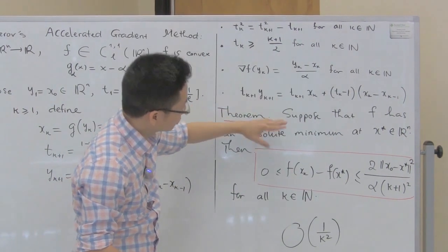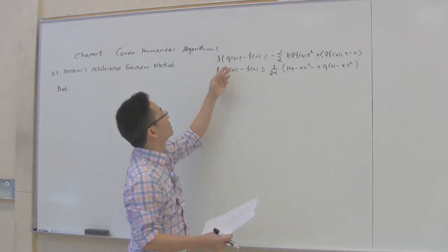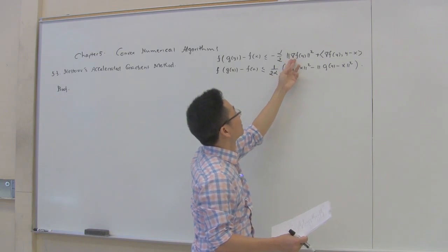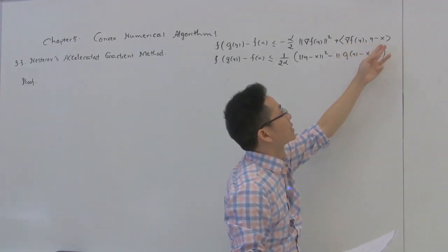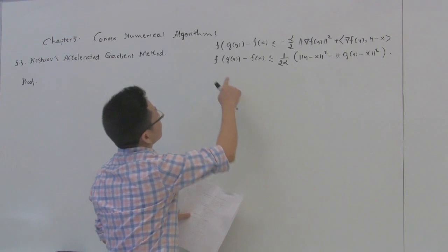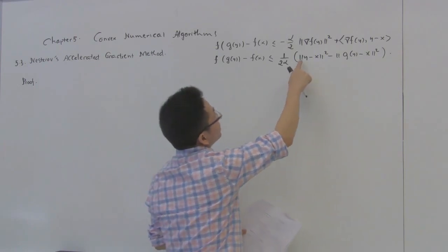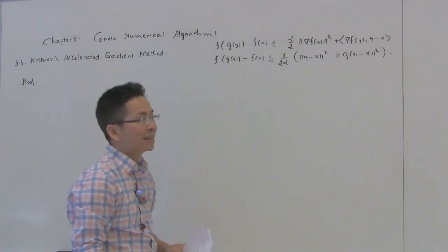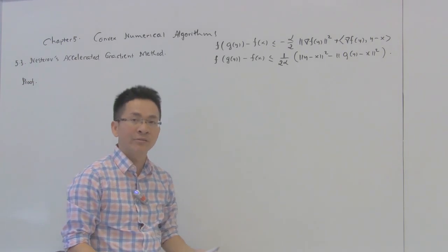Now I'm going to prove that this is true. Let me recall two important inequalities from last time. The first: f(T(y)) - f(x) ≤ -alpha/2 * norm(∇f(y))^2 + ⟨∇f(y), y - x⟩. The right-hand side can be rewritten so that f(T(y)) - f(x) ≤ (1/(2*alpha)) * (norm(y - x)^2 - norm(T(y) - x)^2). This holds for all x and y in R^n.